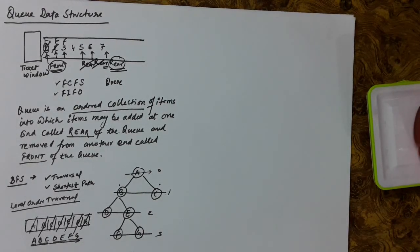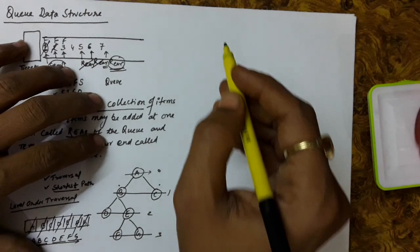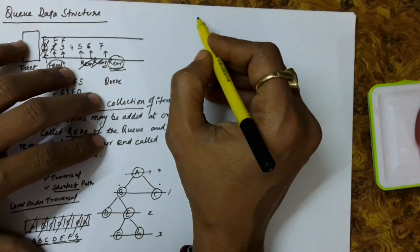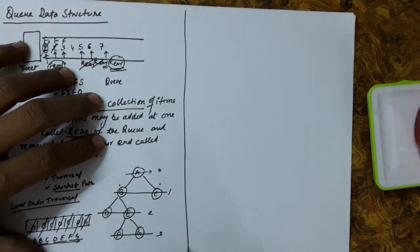In the last lecture, we discussed about the queue data structure. In this lecture, we will discuss about the various types of queues possible.